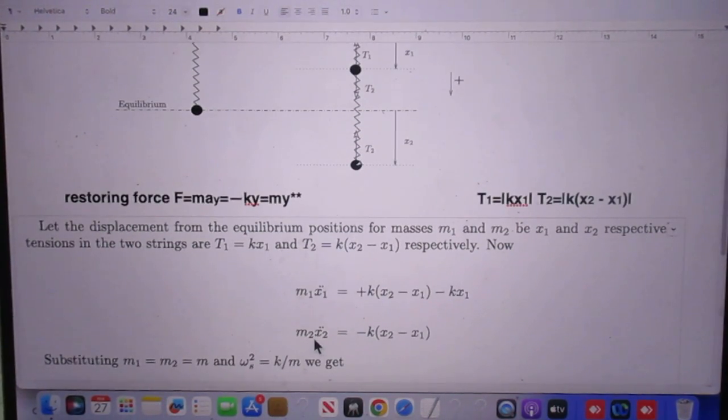Now we go to X2. X2 only has one force acting on it, which is T2, and it is the restoring force, so it's minus K X2 minus X1.